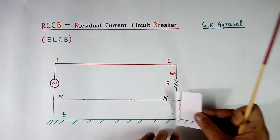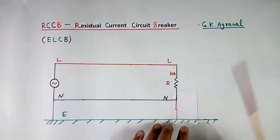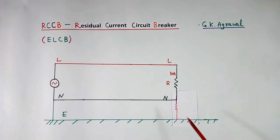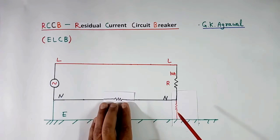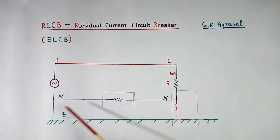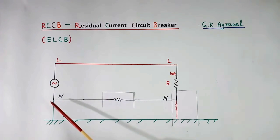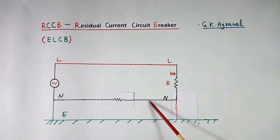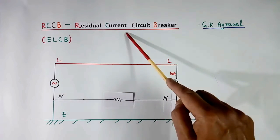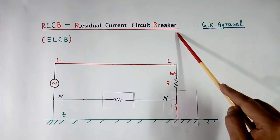Now suppose there is a fault between neutral and ground due to neutral insulation failure or some other thing. Then what happens — this long neutral wire will have some resistance. So this current will find 2 paths: one through neutral and one through earth. So the line current and neutral current will not be equal, there will be residual current, and the circuit breaker will trip.